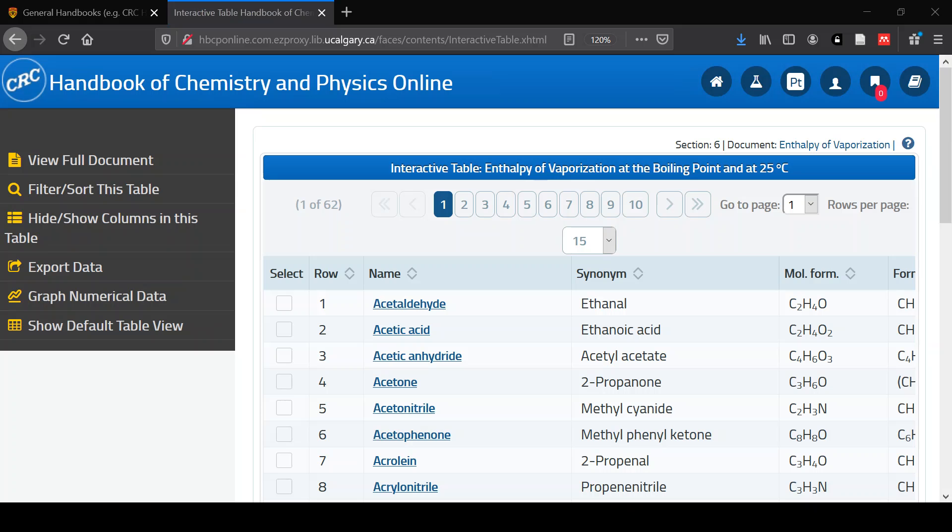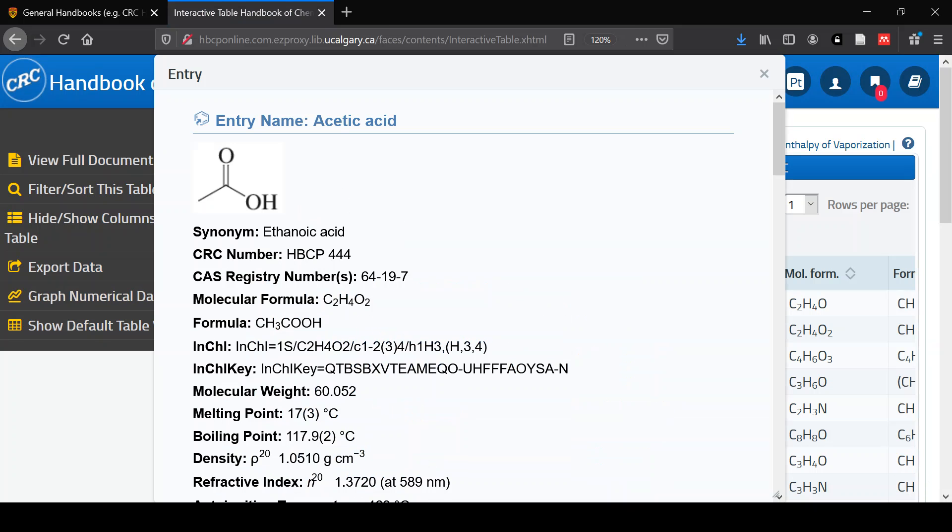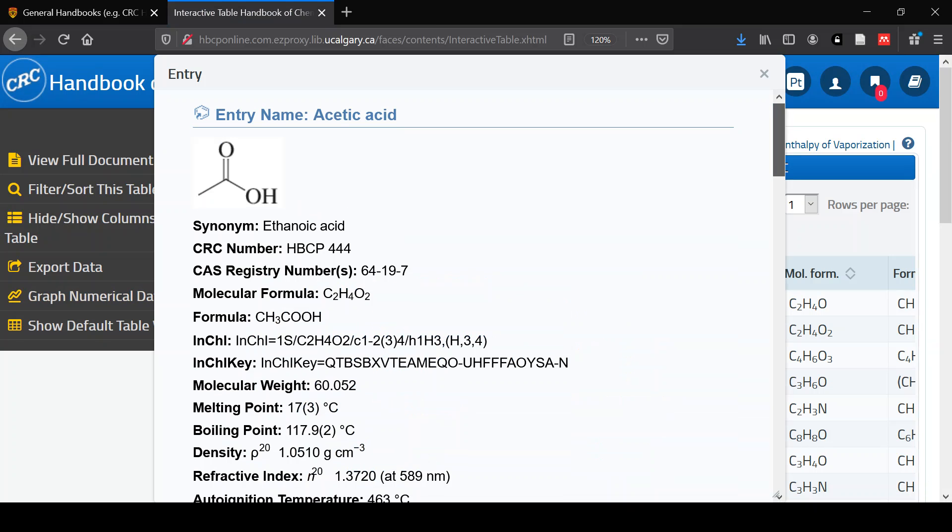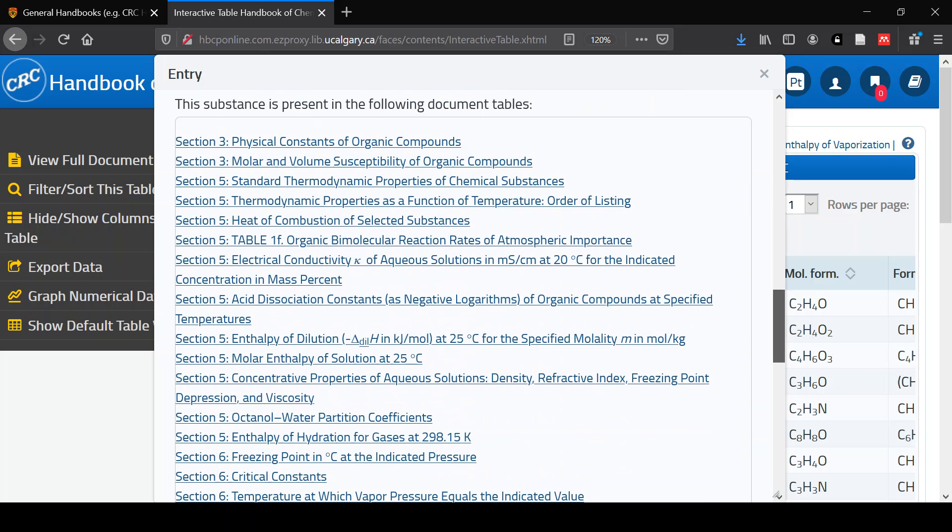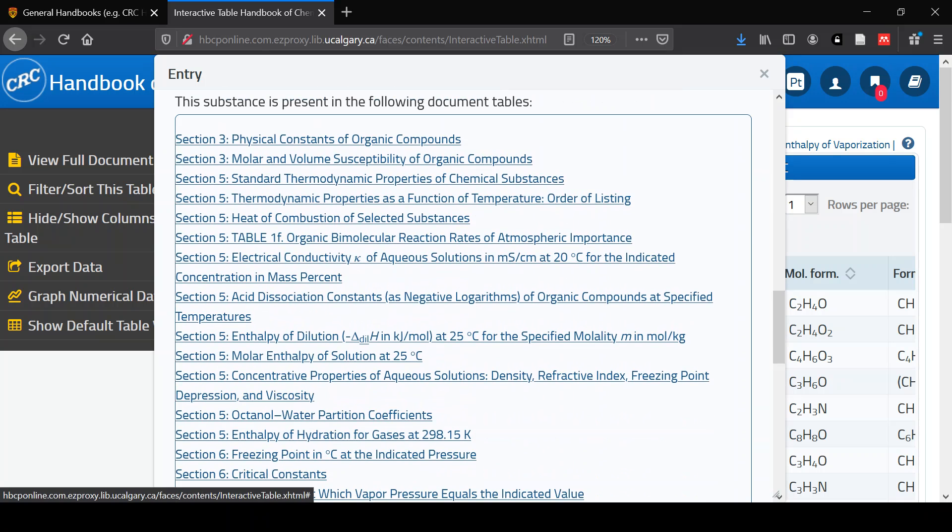The interactive table is a little bit easier to navigate. You can resort, you can kind of go through pages relatively quickly. If you click on any of the names of the compounds, that will give you a pop-up that shows you information about that compound, as well as any of the tables that it's mentioned on within the handbook itself.